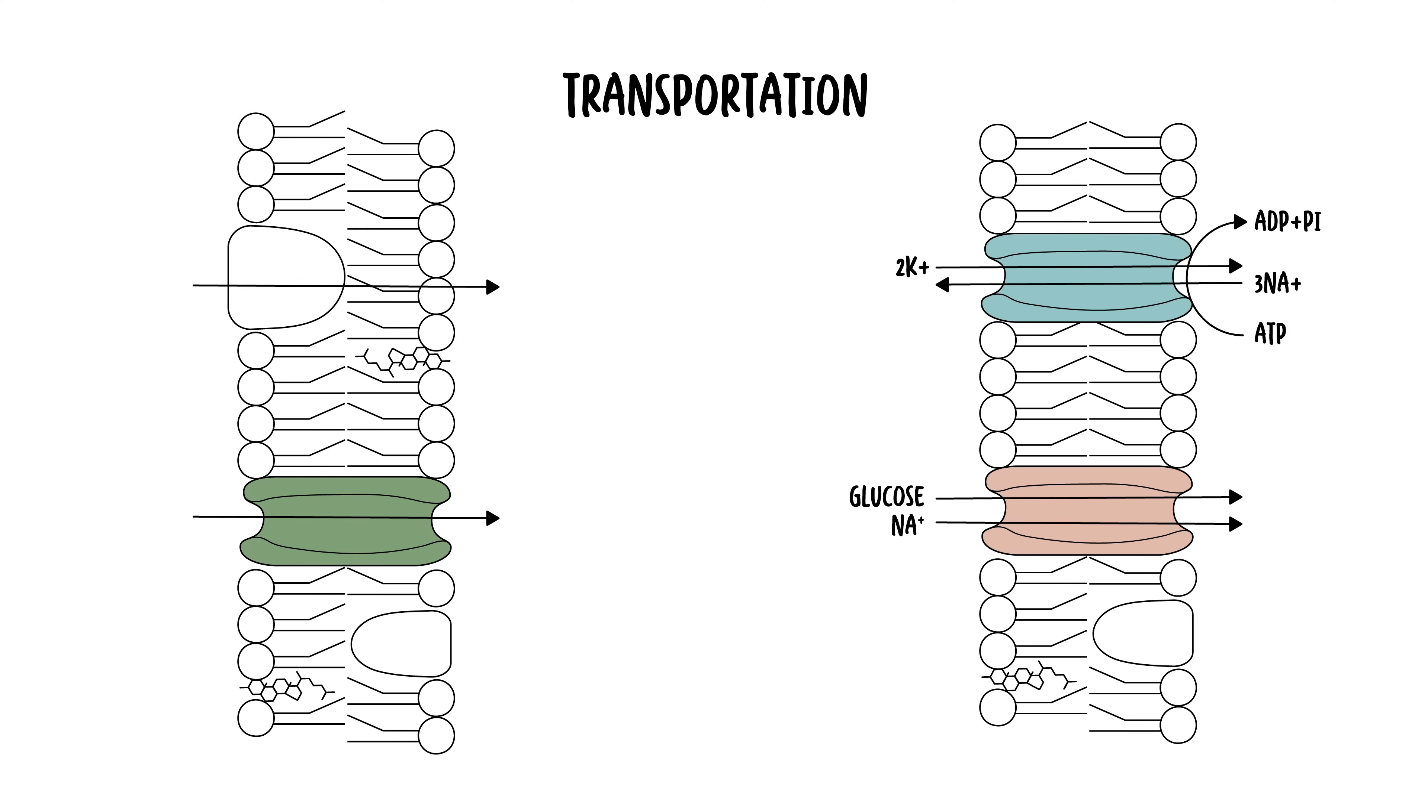You can't talk about the cell membrane without talking about transportation of things in and out of the cell. The cell membrane is involved in several transport mechanisms, categorized into passive and active transport. Talking about passive transport first, which essentially means transportation that requires no energy.